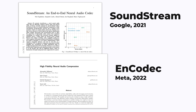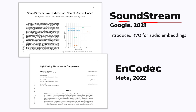For compressing audio embeddings, the SoundStream paper in 2021 introduced the idea of using residual vector quantization. But the SoundStream paper did not release any model weights or any code. So the Encodec paper came out a year later. It made some improvements to the model architecture, but more importantly, they released the model weights and an open source GitHub codebase. So Encodec is the only model that you can pick up and play with.